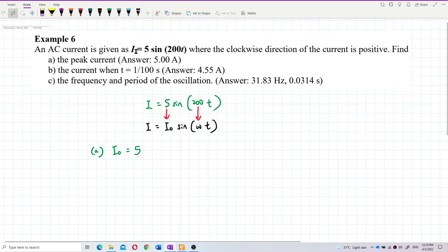Now how about b, what is the current at that time? Just substitute the time there and you can get the current. So 5 sine 200 multiply 1 over 100.